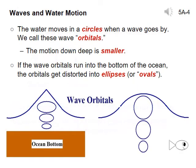Slide 4. Wave orbitals get distorted into ellipses, ovals, in shallow water when the orbitals run into the bottom of the ocean. Thus, orbitals can be circular or oval. Notice that the water moves in circles or ovals of different sizes at different depths as a wave goes by, and that the circles or ovals near the surface are larger.